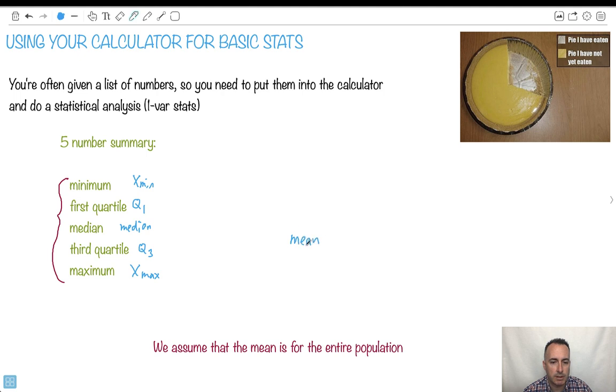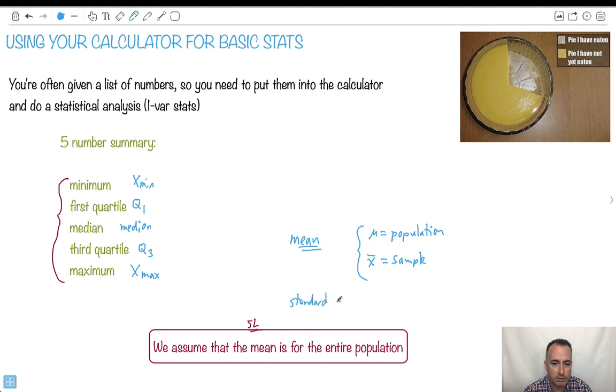Now your calculator also tells you some other things. It'll tell you the mean. Now there is a distinction - HL you might be told otherwise, but at least in SL when we look at the mean you can see them as interchangeable. You'll also be able to find something else called the standard deviation. It has this symbol right here called sigma. This tells you the spread of the data.